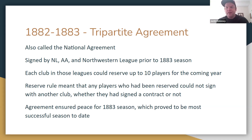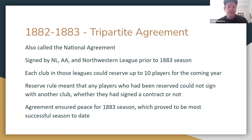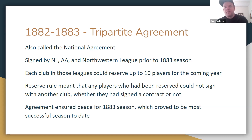This conflict eventually led to what became known as the National Agreement, or Tripartite Agreement, signed between the National League, the American Association, and the newly formed Northwestern League prior to the 1883 season. It solidified the reserve rule in a much stronger way than before and created peace between the leagues. Each club in the agreement could reserve up to 10 players for the coming year. The 1883 season turned out to be the most profitable and successful baseball season to date, with the Athletics setting an attendance record of over 200,000 fans.